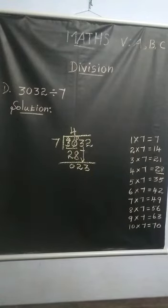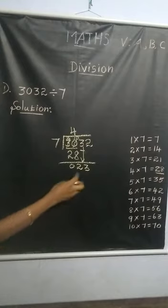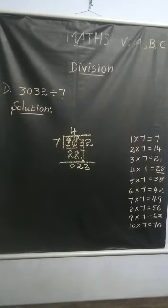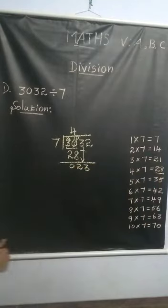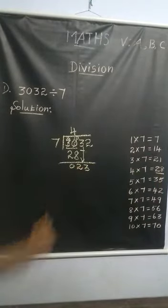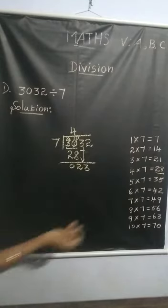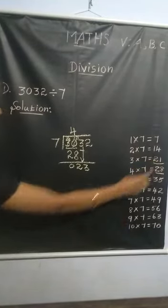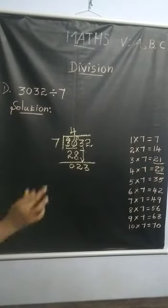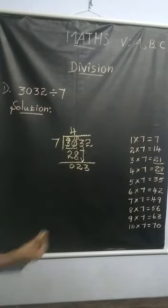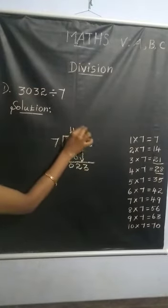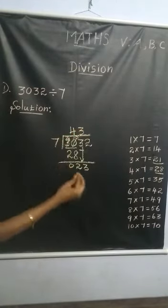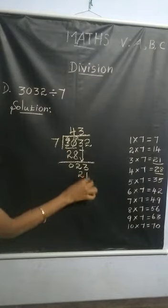What's the first step? Check the table. We have now 23. So we find one value which is nearest and smaller than 23. That value is 21. 21 is nearest but smaller than 23. How many sevens are in 21? 3 sevens are in 21. Write 3 here.